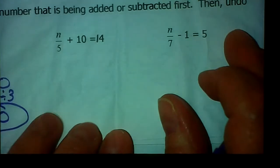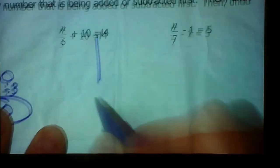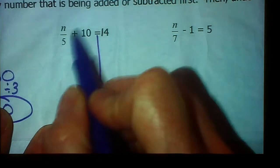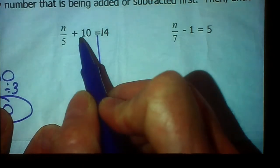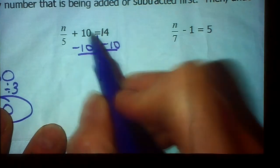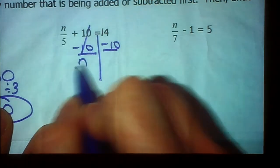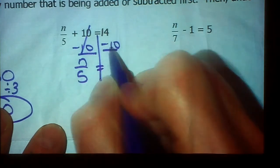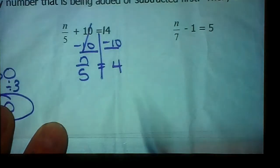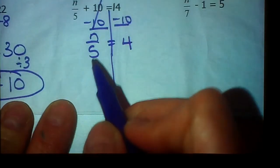All right, 2 left in this section. We have n over 5 plus 10 equals 14. Again, first thing we want to do is get rid of the number that's being added. And 10 is being added. So to undo that, we're going to subtract it. 10 minus 10 is nothing. 0. And n fifths is left. 14 minus 10 is 4. So now we have one more step left.